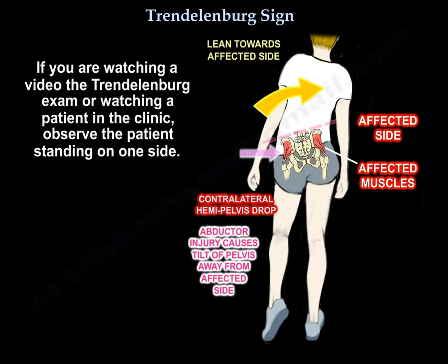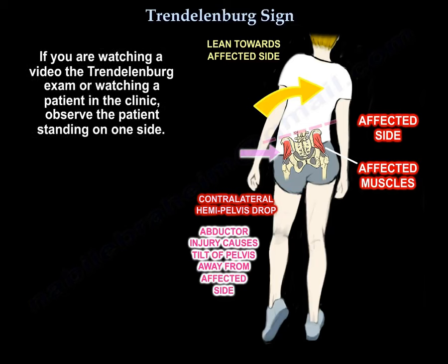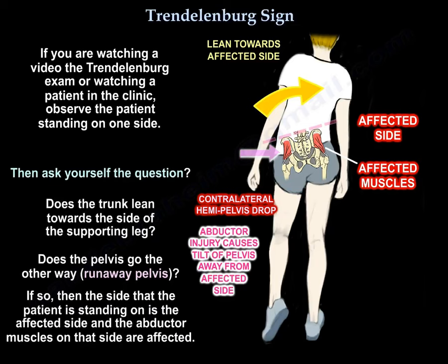If you're watching a video on the Trendelenburg exam, or observing a patient in the clinic, watch the patient standing on one side. Then ask yourself: does the trunk lean towards the side of the supporting leg? And does the pelvis go the other way — the 'runaway pelvis'? If so, then the side the patient is standing on is the affected side, and the abductor muscles on that side are affected.